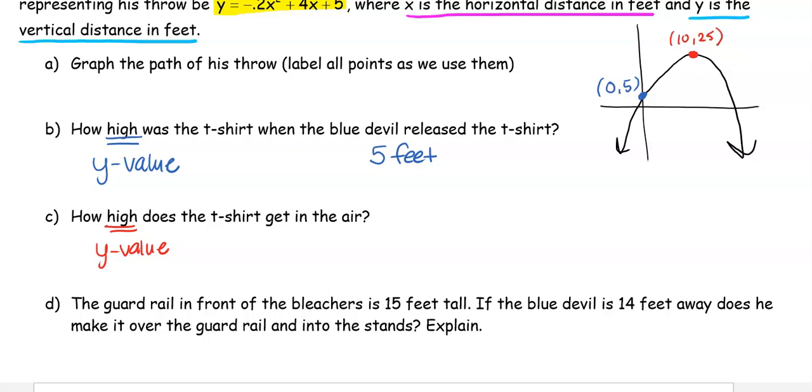Because we want to know how high, we're saying it's 25 feet in the air. It's 10 feet away but it's 25 feet high. So 10 feet away, 25 feet high. We have that point labeled on our graph.